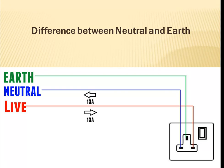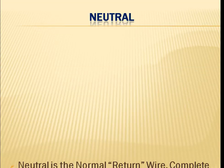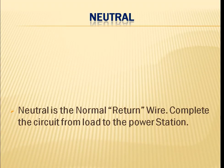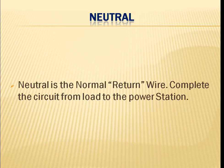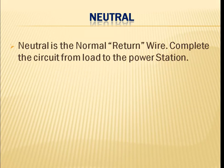Now we will discuss about the neutral wire. Neutral is a normal return wire which completes our circuit. Our current and energy flows from the power station to our load, and then by using the neutral wire, this energy returns from the load back to our power station.